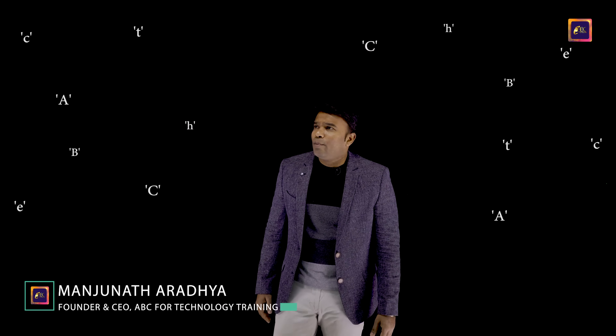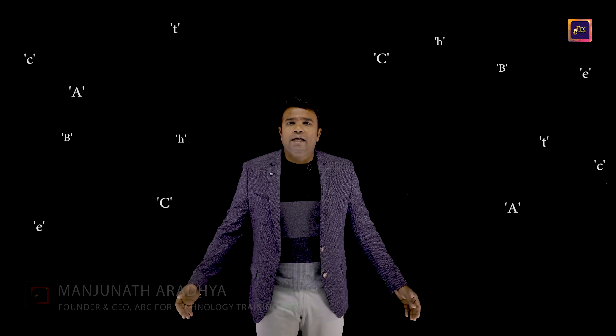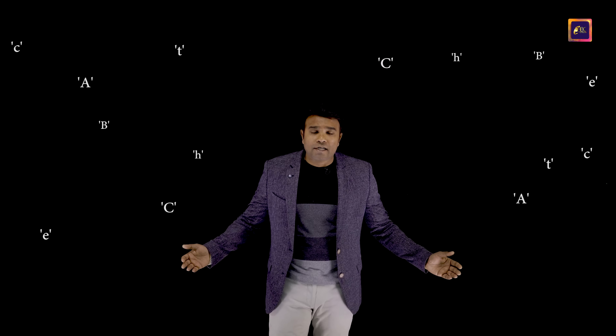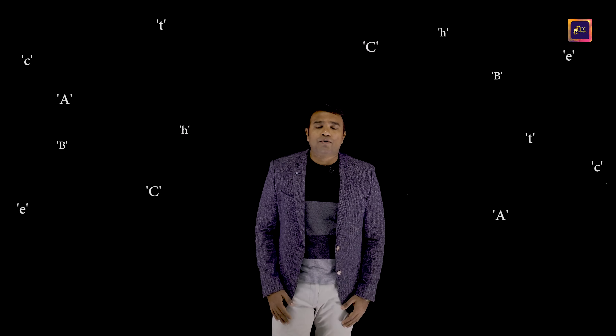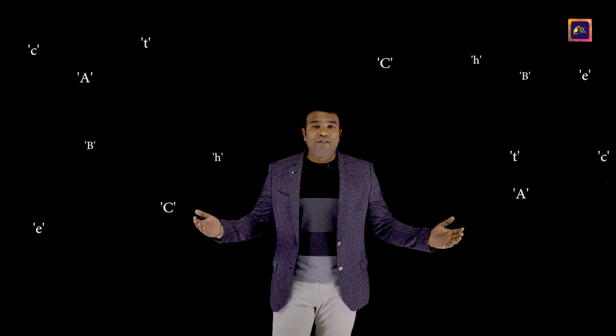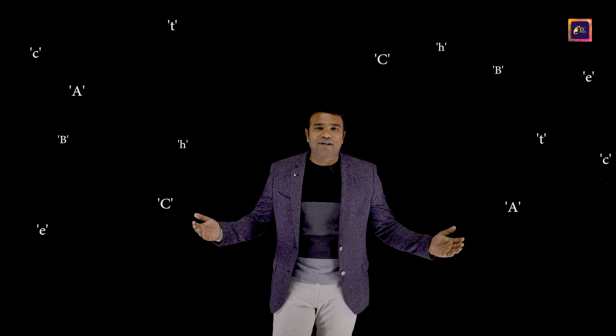Hello everyone, let's try understanding strings in detail. Floating around me are all the characters. Technically, a character is enclosed within a single quote. How do we get a string out of these characters? Let's explore.